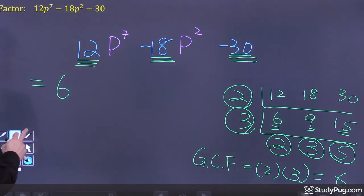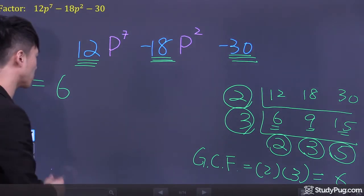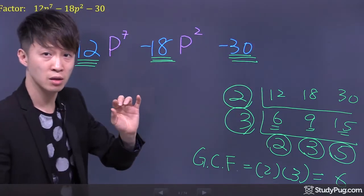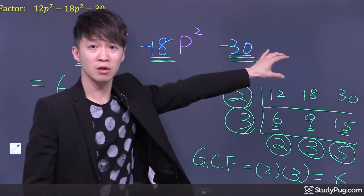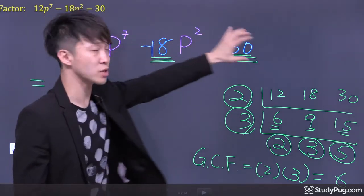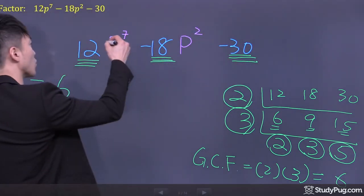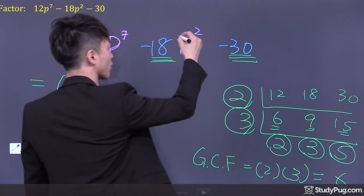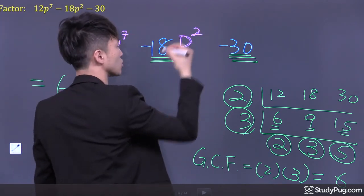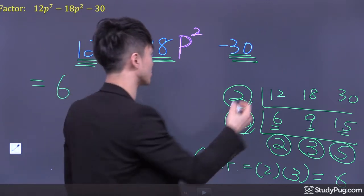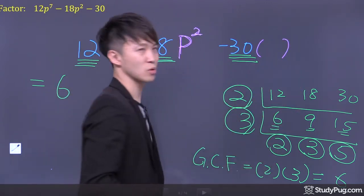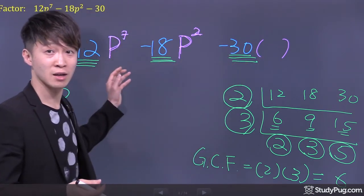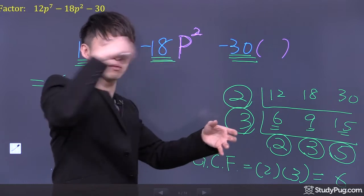Now how about the p? Is p common for all three terms here? Let's see. First term we have p to the power of 7. Second term we have p to the power of 2. But how about the third term? We don't have p. Then p is not common for everybody. So we cannot take out p.